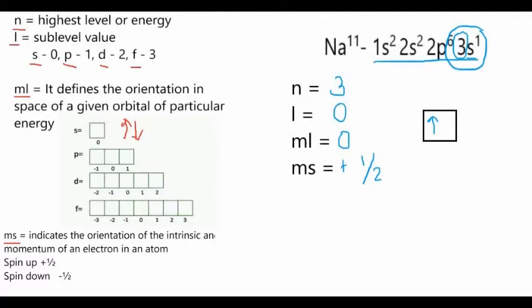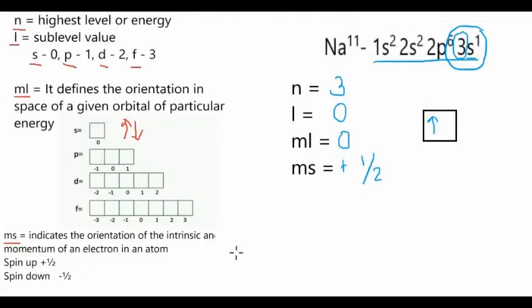So we now have all the quantum numbers for sodium: n is 3, l is 0 because we ended in s, ml is 0 because there is one box for s with value 0, and ms is positive one half because our electron is represented by an arrow up or spin up.